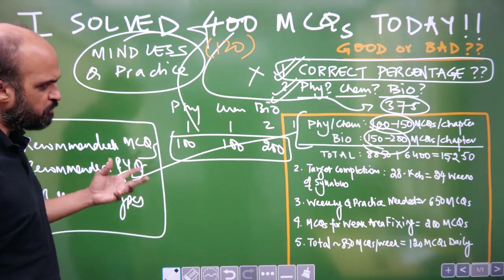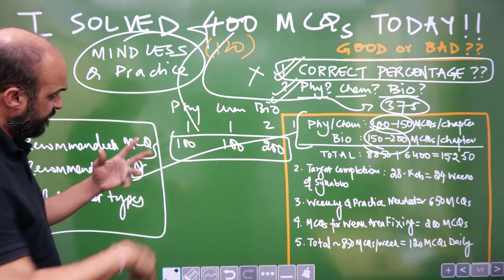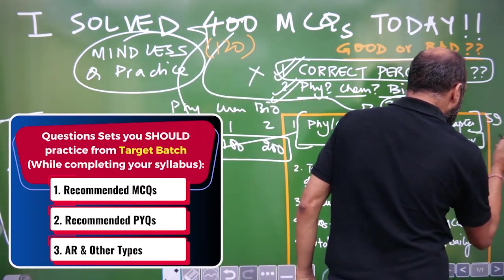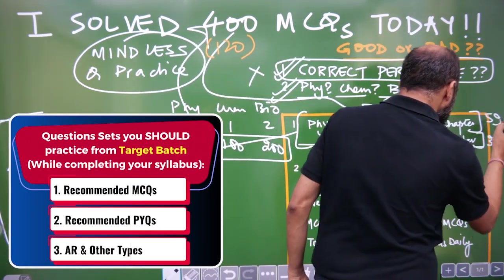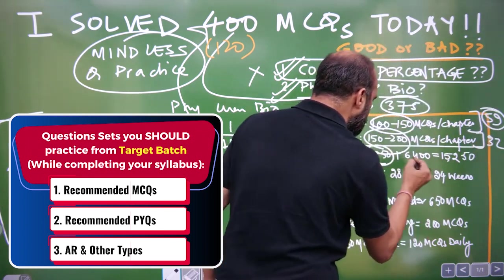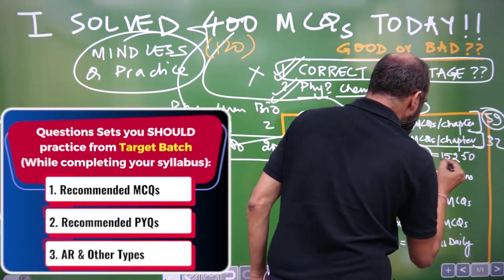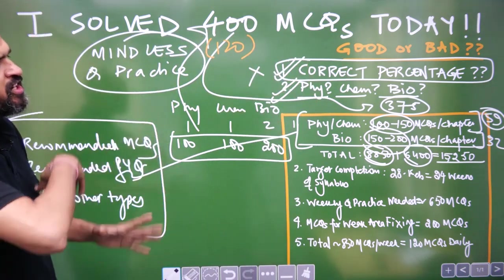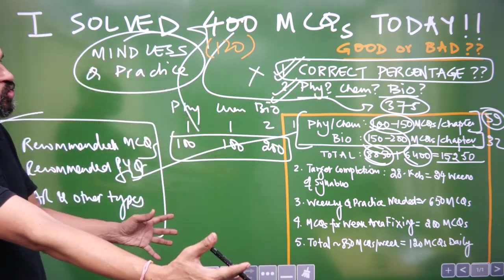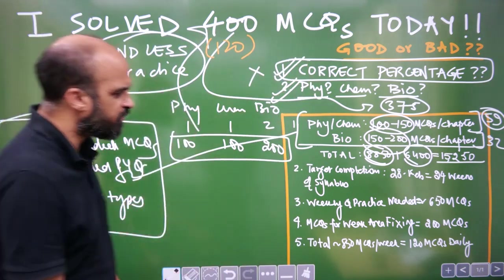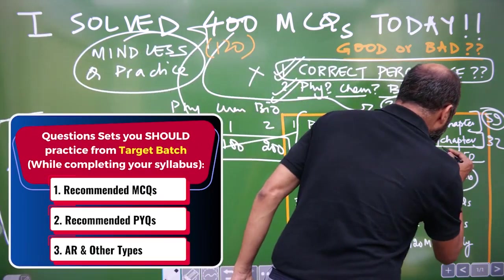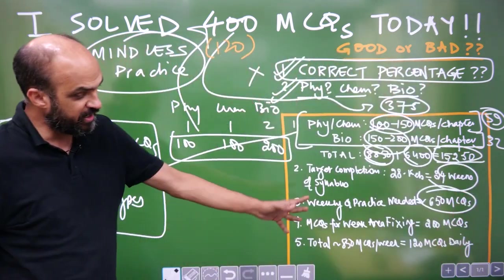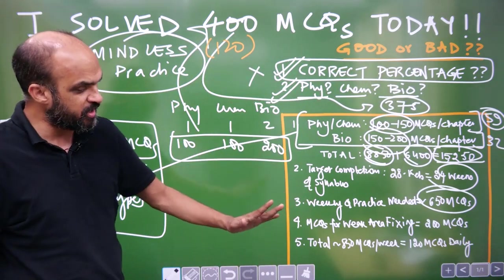So, it is important that what this translates into is physics and AR are 59 chapters. Bio, AR, 32 chapters. 59 into 150 is 8850. 32 into 200, 6400. Total 15,250 questions. If you have to finish everything from now till 28 February, which is around 24 weeks, divide 15,250 by 24 weeks, you will get 650 MCQs. In a week, which means daily less than 100 MCQs.